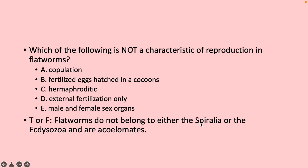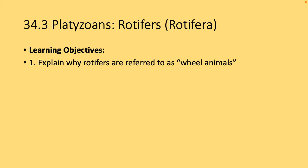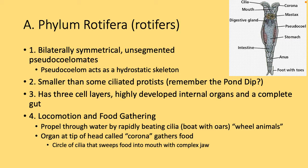True or false: flatworms do not belong to either the Spiralia or the Ecdysozoa and are acoelomates. True. Still in the Platozoans — the Rotifers, also known as wheeled animals. Your big objective here is to understand why they are called wheeled animals. They have bilateral symmetry, are unsegmented pseudocoelomates, and the pseudocoelom helps them move — it acts as a hydrostatic skeleton, a tube within a tube. These are smaller than some ciliated protists.